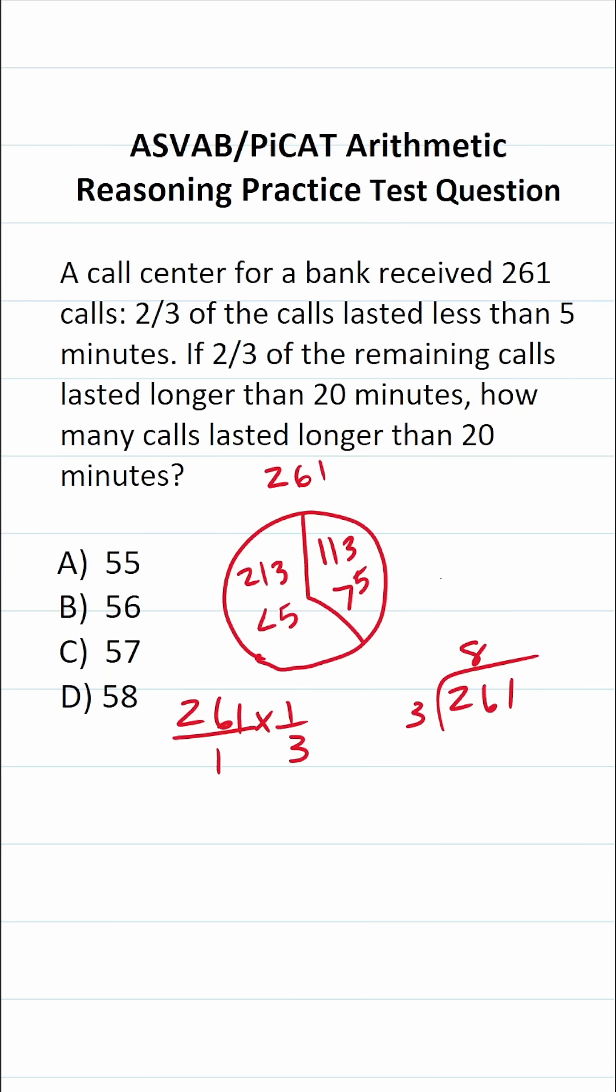261 divided by three is going to be 87. Eight times three is 24. 26 minus 24 is two. Drop down this one. Seven times three is exactly 21 with no remainder. So that means 87 of the remaining calls were greater than five minutes.